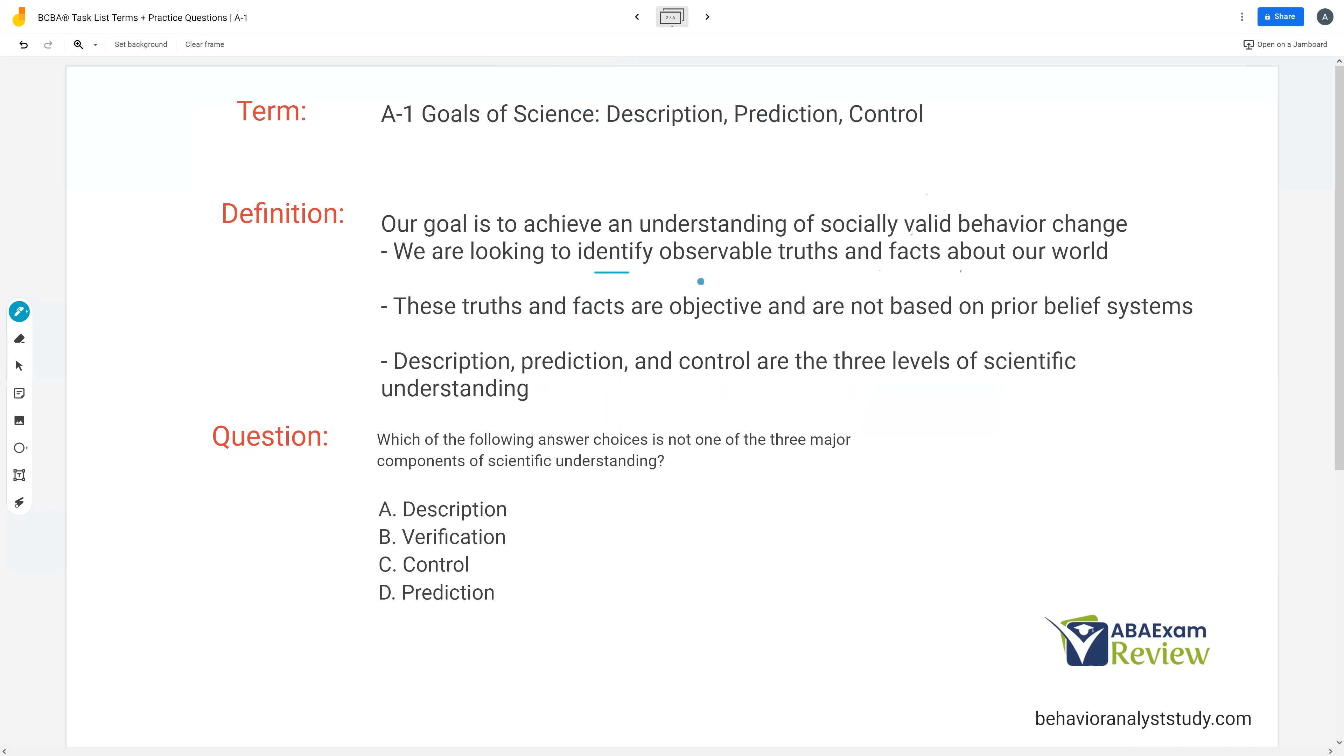So what we're trying to do is identify observable truths and facts about our world. And it's very important, this word observable. Remember, we want to be able to see what we're measuring so that we can change it. Additionally, we're looking for facts. These truths and facts are objective and are not based on prior belief systems. That's the crux of science. Because in ABA, we don't say, this is what I feel. It's what we observe and what we observe repeatedly. We're trying to objectively demonstrate behavior change and observable, measurable behavior that can be consistently and reliably seen.